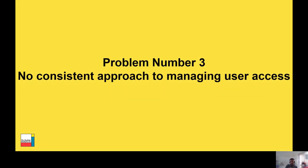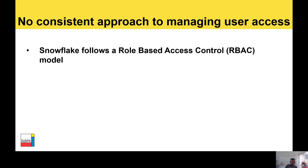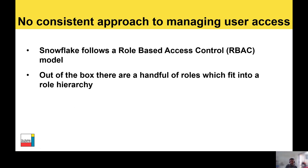Problem number three: no consistent approach to managing user access. Snowflake follows a role-based access control, or RBAC, model and enforces it very tightly — it forces you to pick a role when you run a query and checks that role to see what privileges you have before executing the query. Out of the box, there are a handful of roles which fit into a hierarchy, but extending that initial hierarchy by adding custom roles starts off relatively easy but can quite quickly turn into something very complex and hard to manage.